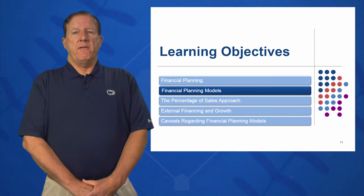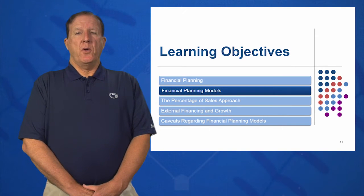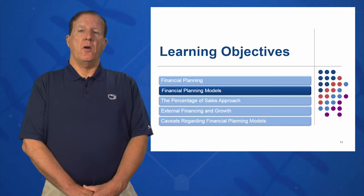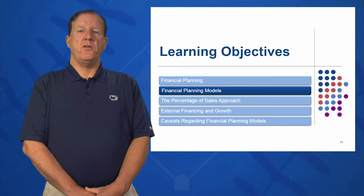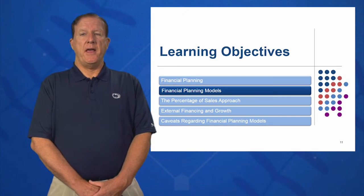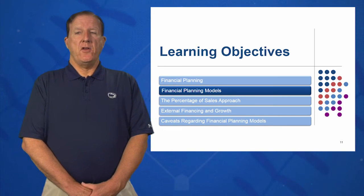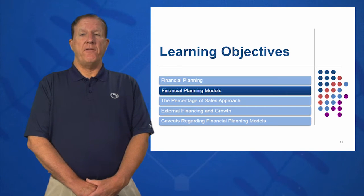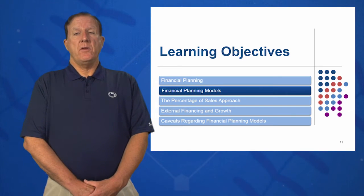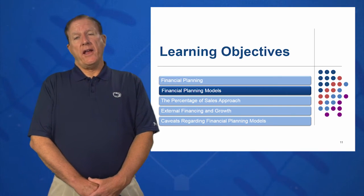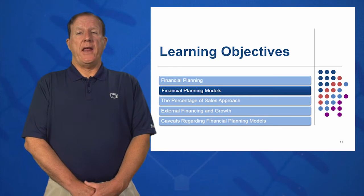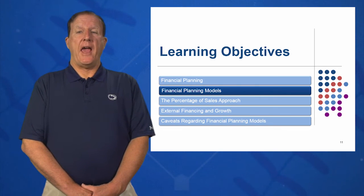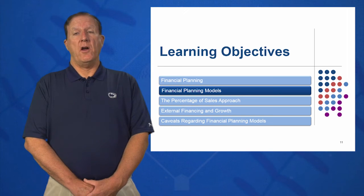In learning objective number two, we're going to apply our knowledge to Rosengarten Corporation first, and we're going to do a financial plan using existing actuals for this year, and then forecast their future financials — income statement, balance sheet, and cash flow — based on how fast they would like to grow.